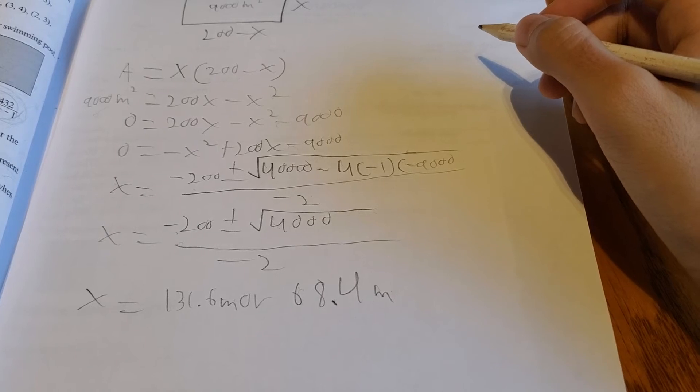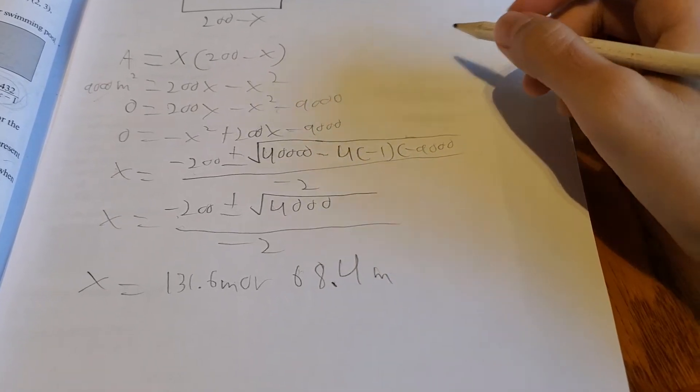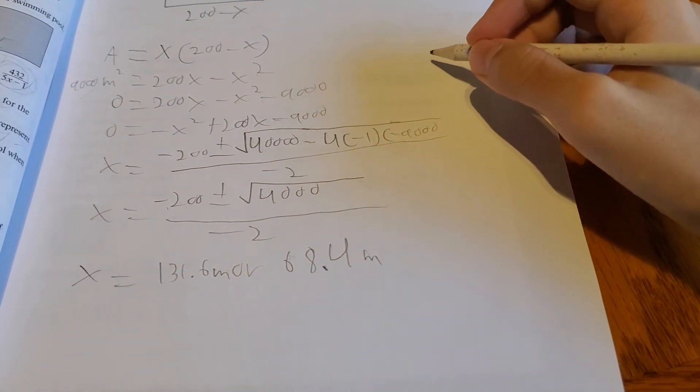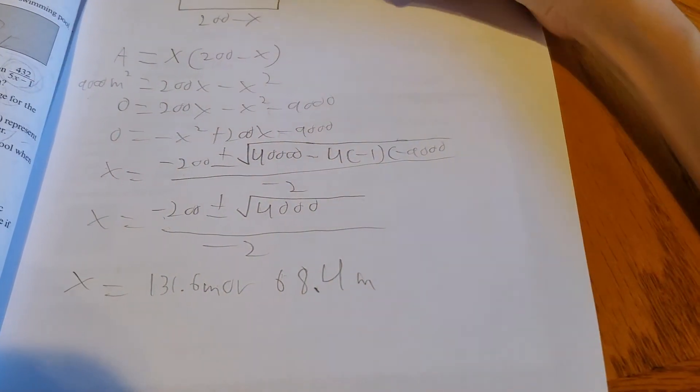So therefore the width of our field is the shorter side, which is 68.4 meters.